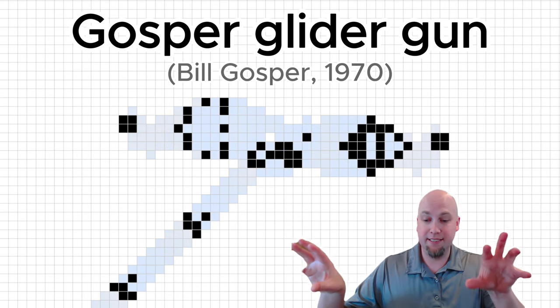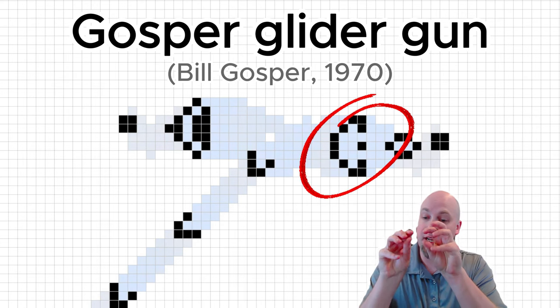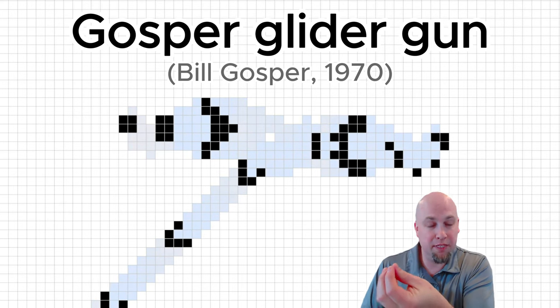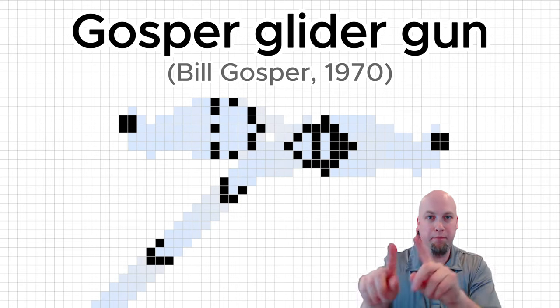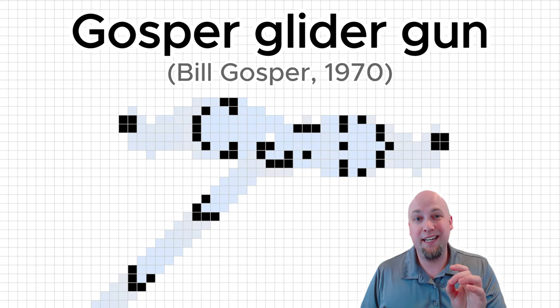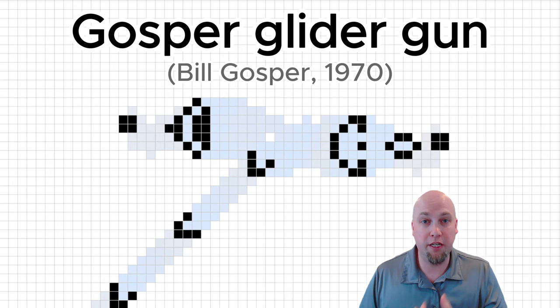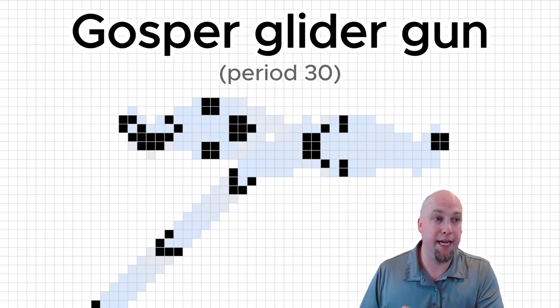And what happens is this pattern uses two configurations called queen bees to bounce into each other. And when they hit each other, they collide in such a way that the debris in the middle creates a glider that then escapes away from the two queen bees, which then just bounce back and forth and do this over and over again. And this gun, that entire procedure that I just described there, that happens once every 30 generations. So this is what we call a period 30 glider gun.